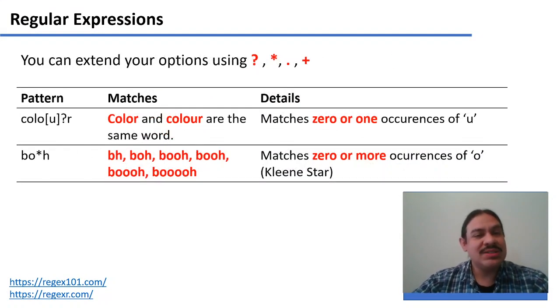There are several wildcards that you can use. For example, the question mark will find the character zero times or one time. The word color, for example, is written different ways throughout the English-speaking world. Sometimes it's written color, as in the US without a U, or sometimes it's written color with the U, like they do in Great Britain or New Zealand.